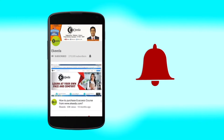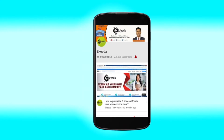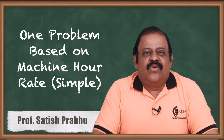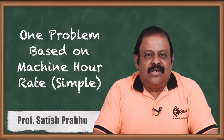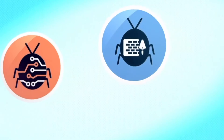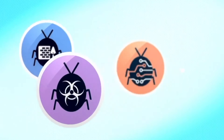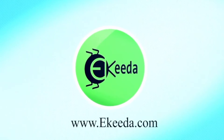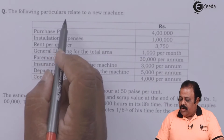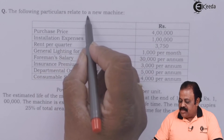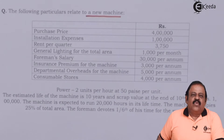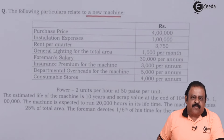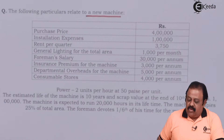Hello friends, we will discuss today one question on machine hour rate. It will be a basic question — try to understand the basic concept. To find out machine hour rate, we are required to bifurcate expenses between standing charges and running charges, that is fixed cost and variable cost.